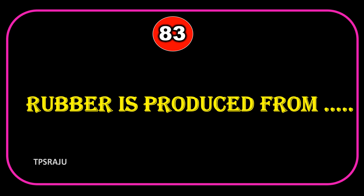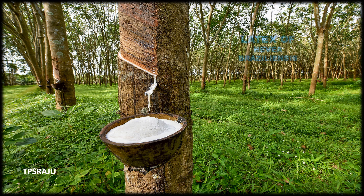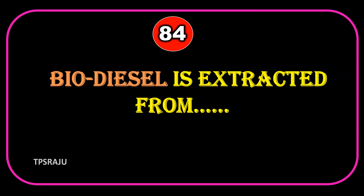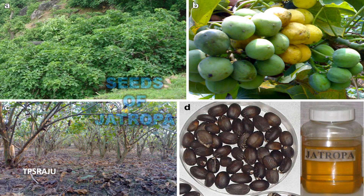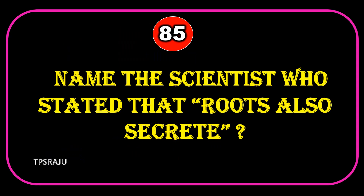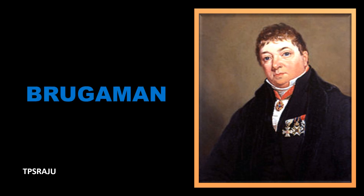Rubber is produced from the latex of Hevea brasiliensis. Biodiesel is extracted from the seeds of Jatropha. Name the scientist who stated that roots also secrete waste materials.